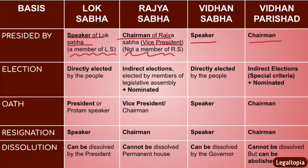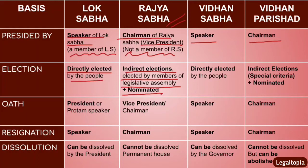For elections: Lok Sabha members are directly elected by the people of the nation. Rajya Sabha members are indirectly elected by the elected members of the Legislative Assembly (Vidhan Sabha). Additionally, the 12 nominated members of Rajya Sabha are nominated by the President. Vidhan Sabha members are directly elected by the people. Vidhan Parishat members are indirectly elected by special criteria, and its nominated members are nominated by the Governor.